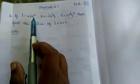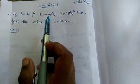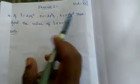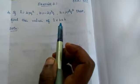Now if L equal to 4PQ square, B equal to minus 3P square Q, h equal to 2P cubed Q cubed, then find the value of L into B into h.